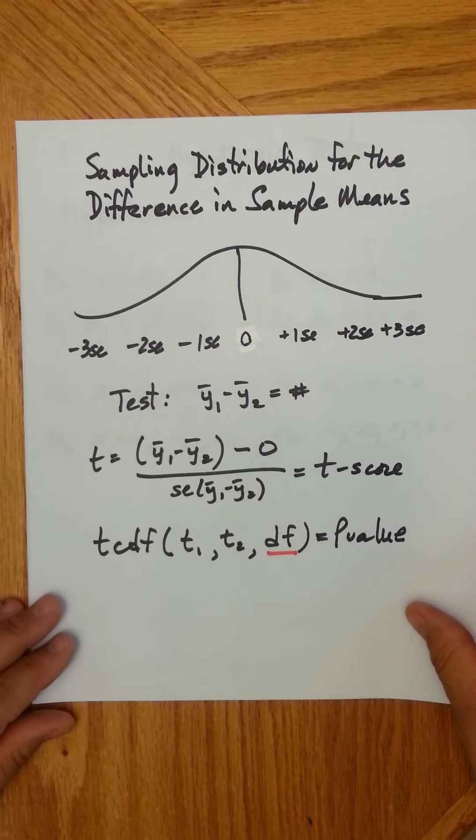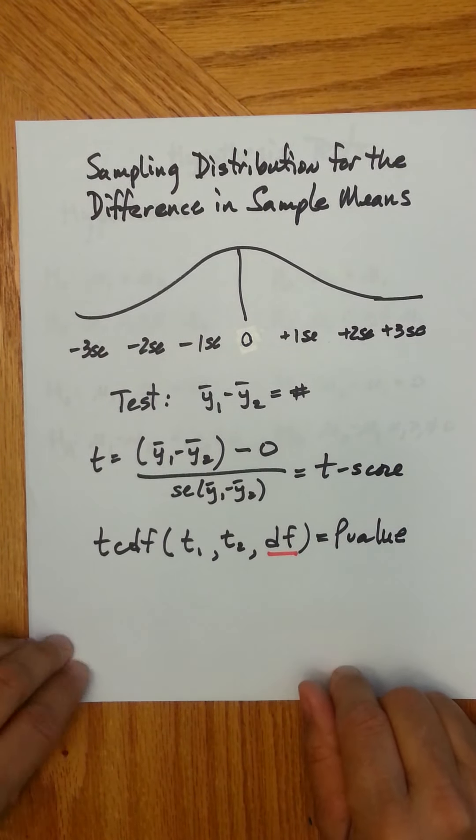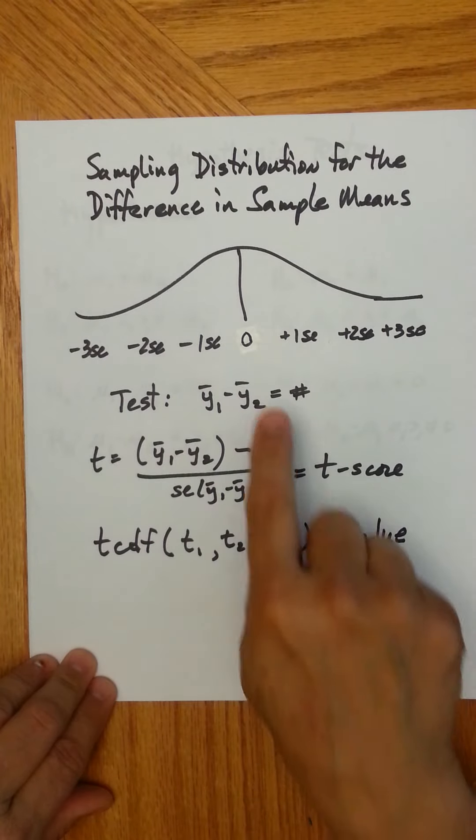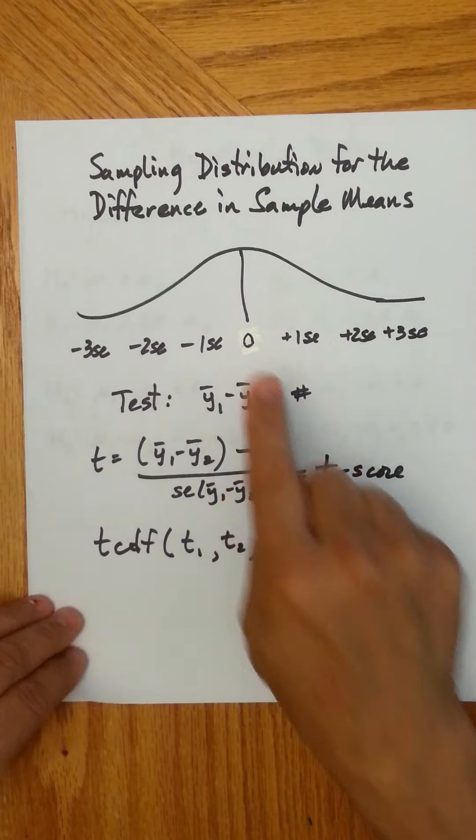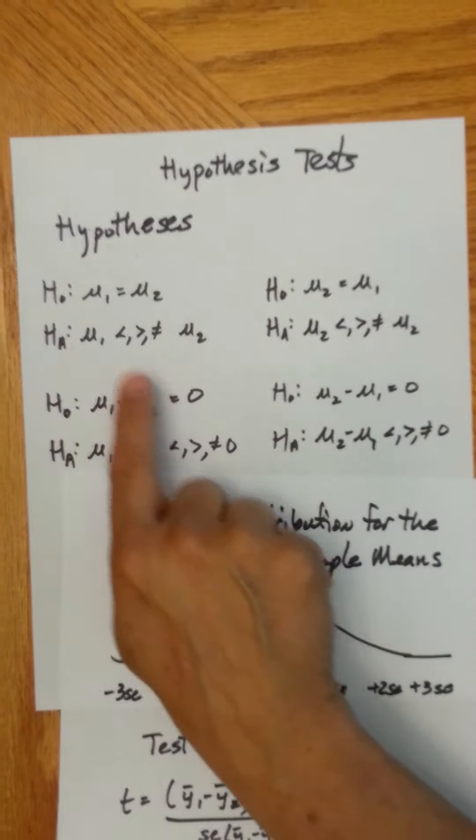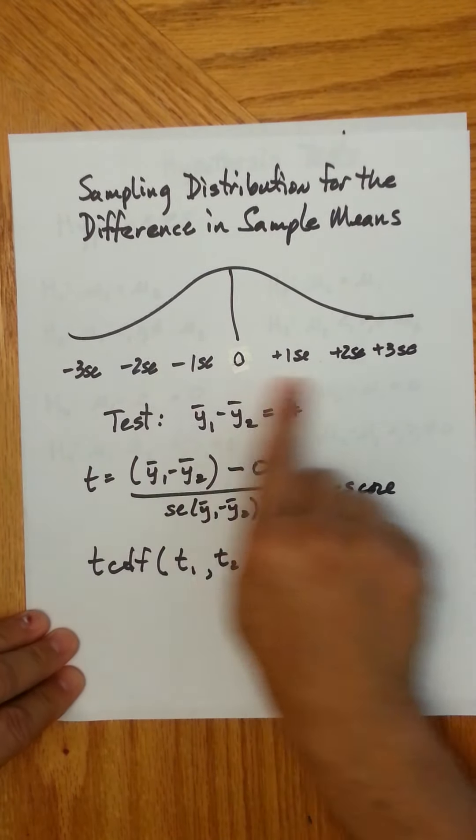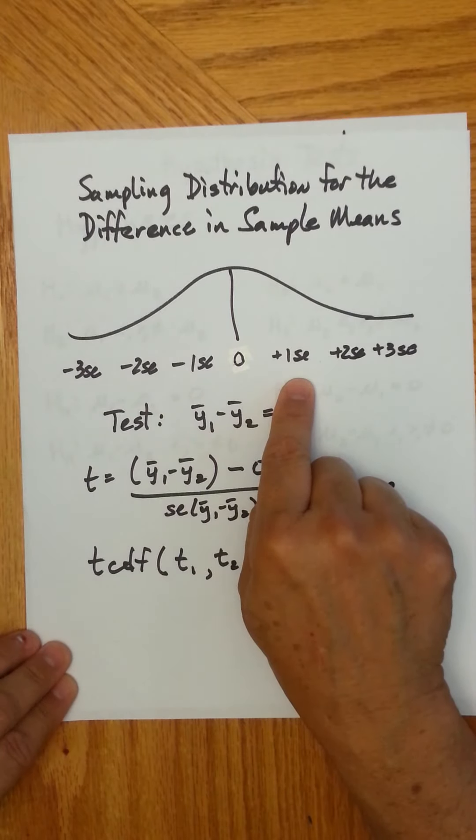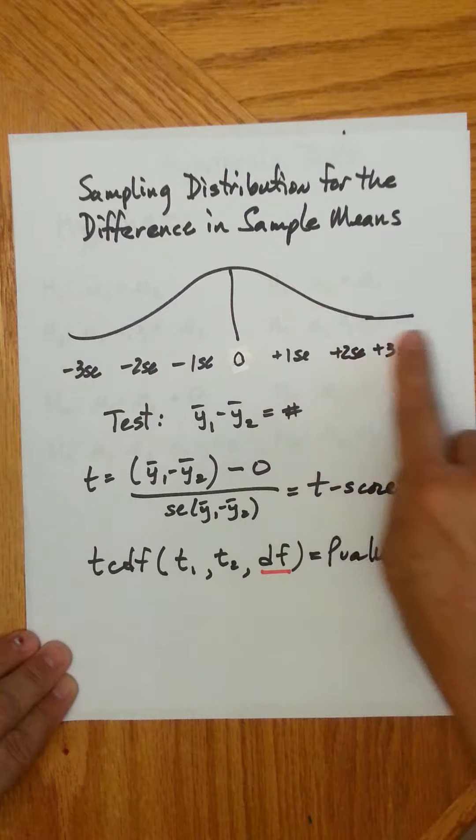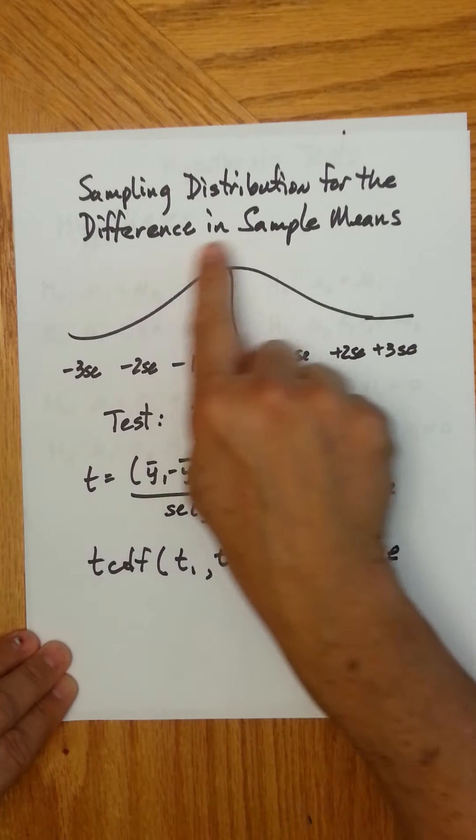Then, you go ahead and say, let's take a look at the sampling distribution for the difference in the sample means. The null is zero, right? Because you're assuming the two groups are the same, so their difference is zero. Now, when you find the standard error, you add it three times and subtract it three times to get the distribution of the difference in sample means.